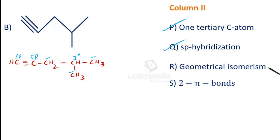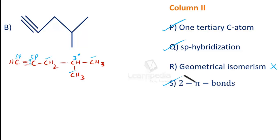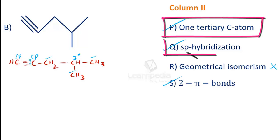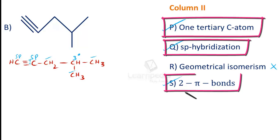As there is no double bond in compound B, there is no need to consider geometrical isomerism. Since a triple bond is present, out of the three bonds, one is a sigma bond and the remaining two are pi bonds — so two pi bonds are present, satisfying property S. The correct match for B is P, Q, and S.